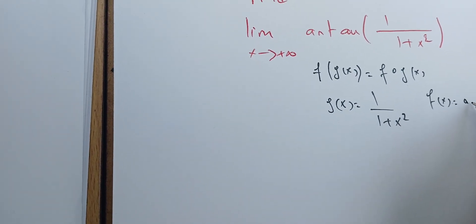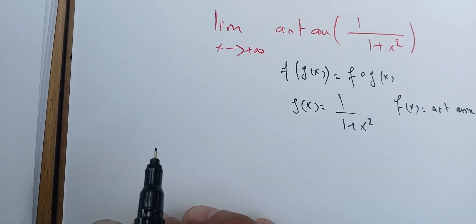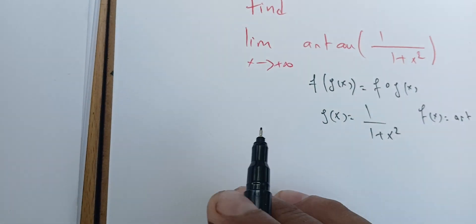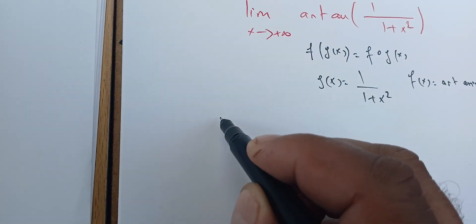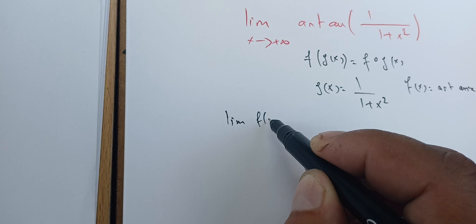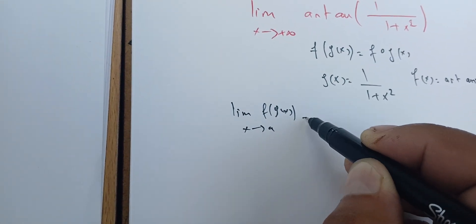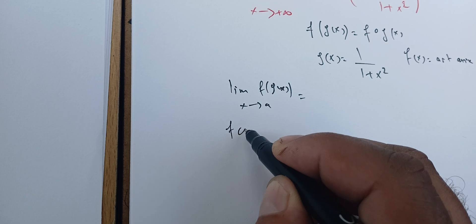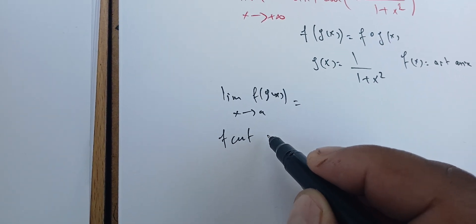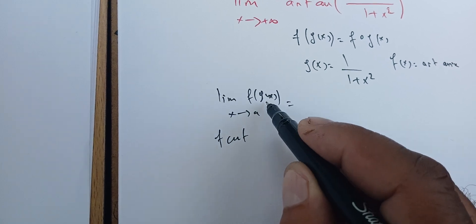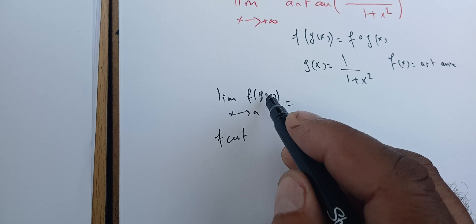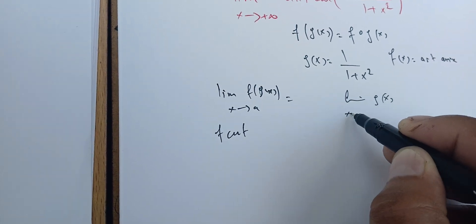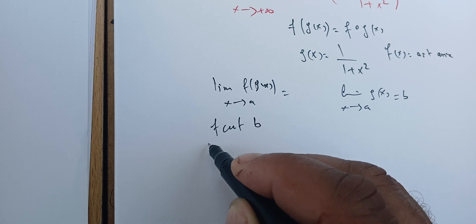And f of x is the arc tangent of x. When dealing with a composite function, we can use one of the famous theorems. To compute the limit of f of g of x as x goes to a, we need two conditions: first, f must be continuous — specifically, if the limit of g of x as x goes to a is b, then f must be continuous at b.